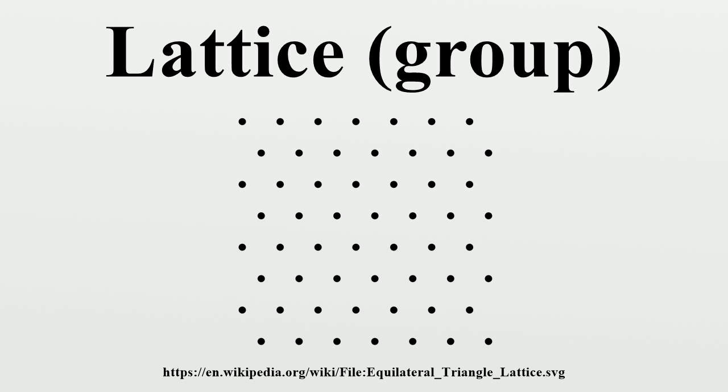Each pair p,q defines a parallelogram, all with the same area, the magnitude of the cross product. One parallelogram fully defines the whole object. Without further symmetry, this parallelogram is a fundamental parallelogram.